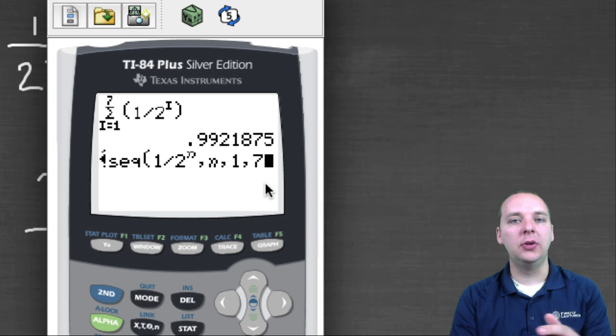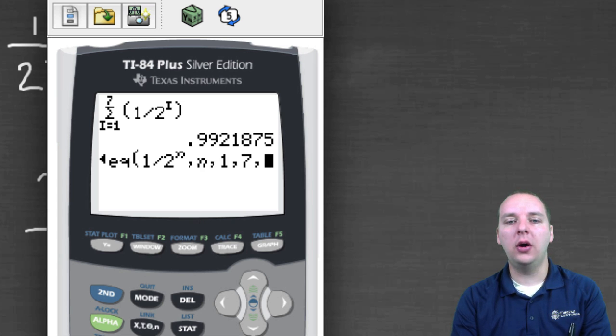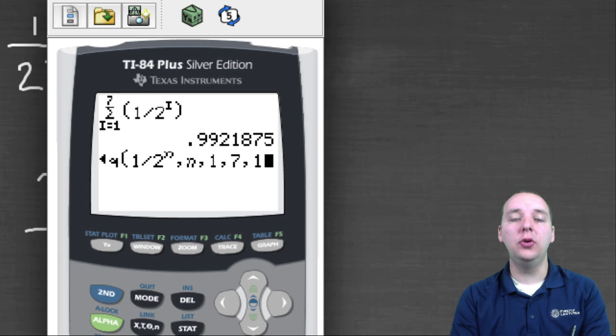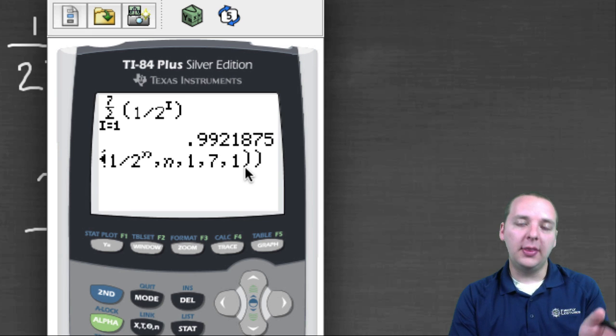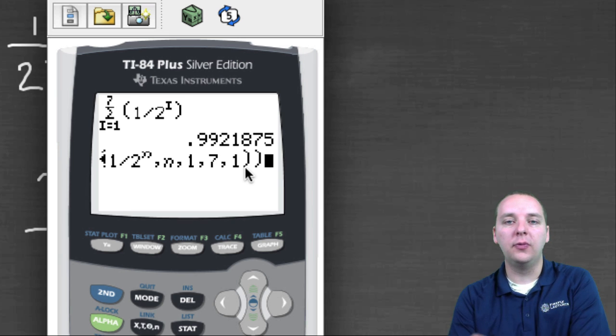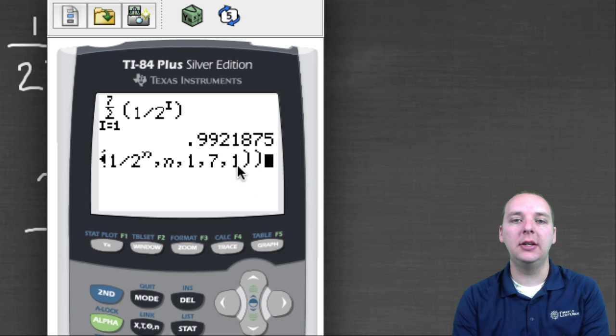Now these two you can probably guess why you need this in the syntax. This is a sequence, one over two to the N, which is a function of N. We're going to add up the terms from one to seven. And those are all somewhat intuitive. The last term, however, is a little weird. You also have to put comma one, and you'll almost always put comma one. Now what's that last random number doing? This is telling it how far it's supposed to step to the right with every term in the sum. Obviously, we're going to go from one to two, and from two to three, and from three to four, and four to five, five to six, six to seven, stepping to the right one unit every time.